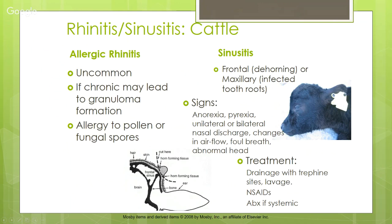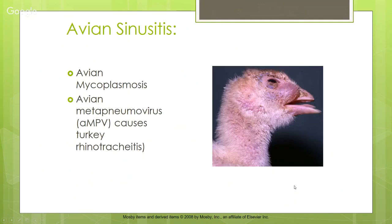Signs of cattle sinusitis include anorexia, pyrexia, unilateral or bilateral nasal discharge, changes in airflow — you can see the skin moving in and out with each breath — and foul breath with an abnormal head shape. Treatment involves draining with trephine sites (drilling holes into the skull), lavaging, using NSAIDs and antibiotics. If systemic, further intervention is needed.